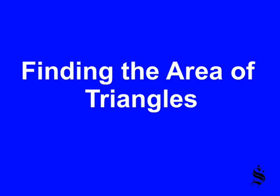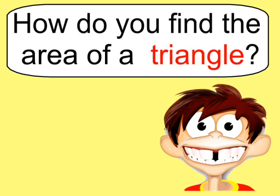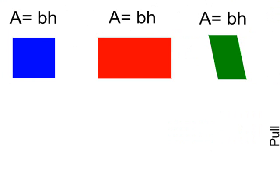We're looking at the area of triangles. How do you find the area of a triangle? In a previous video we looked at how to find the area of quadrilaterals. For squares, rectangles, and parallelograms you can really use the same formula: to find the area you simply multiply the base times the height.